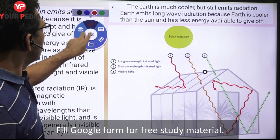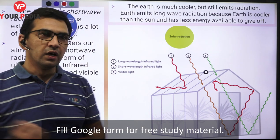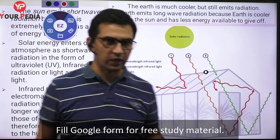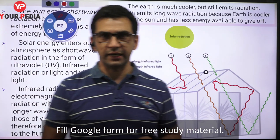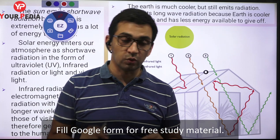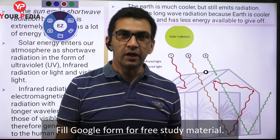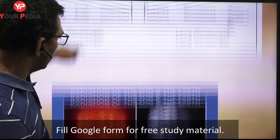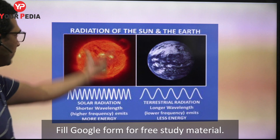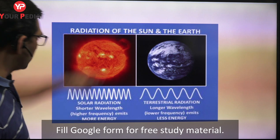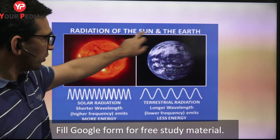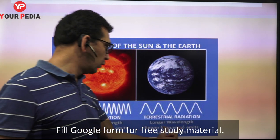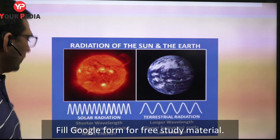One important point: any body having a temperature above zero Kelvin emits radiation. If the temperature of a body is very high, it releases shorter wavelength radiations; the cooler the body, the longer the wavelength of radiation it releases. Since the sun is a very hot body, it produces shorter wavelength radiations. The earth, being much cooler, releases longer wavelength or lower energy radiations.